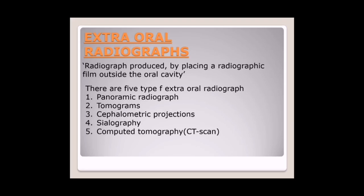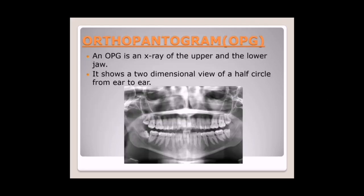Now we further proceed to extraoral radiographs — radiographs produced by placing the radiographic film outside the oral cavity. There are five types of extraoral radiographs: number one, panoramic radiograph, also known as OPT; number two, tomograph; number three, cephalometric projections; number four, sialography; number five, computed tomography — CT scans.